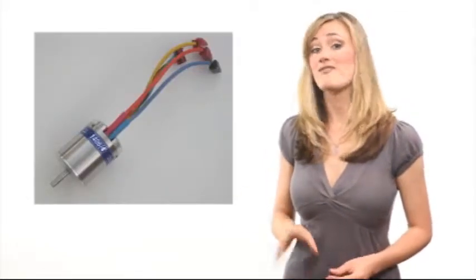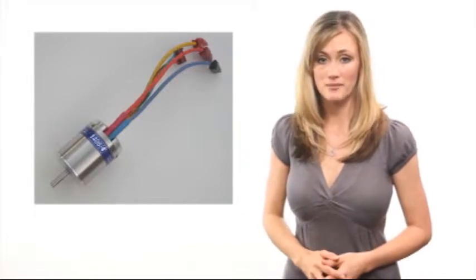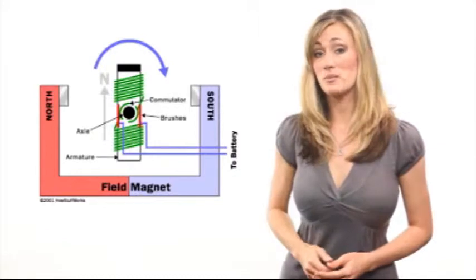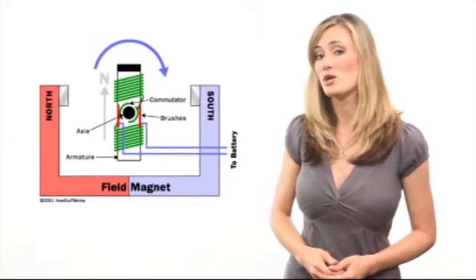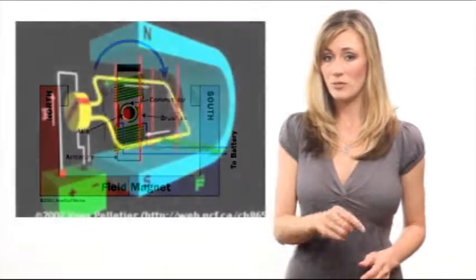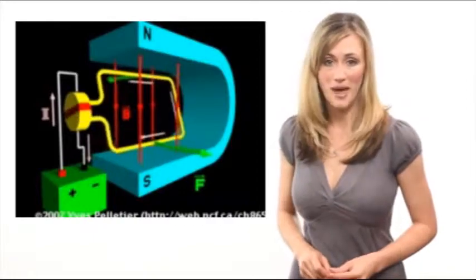Although electric motors have thousands of applications, they all work based on the same concept: electromagnetism. The basic principle of electromagnetism states that when you run an electric current through a wire, a magnetic field is generated. So when you run electricity through a wire, the wire itself becomes an electromagnet.